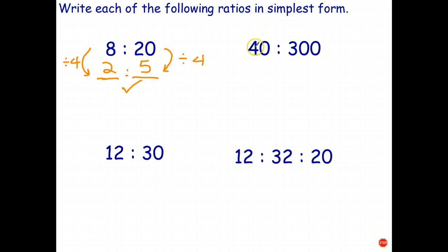What about 40 is to 300? These numbers are quite big, but I know that I can start by dividing by 10. And the effect of dividing by 10 is to take a zero off the end of each number. So now I've got four is to 30, but both of those are even numbers. So the highest common factor of four and 30. Four doesn't go into 30, so it must be two.